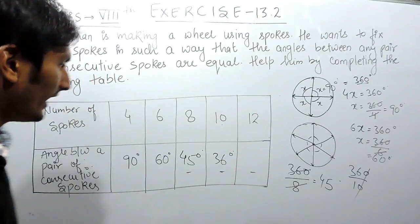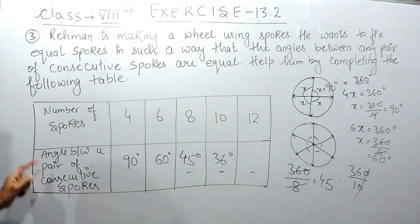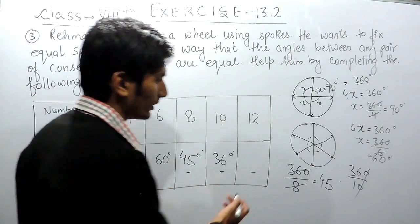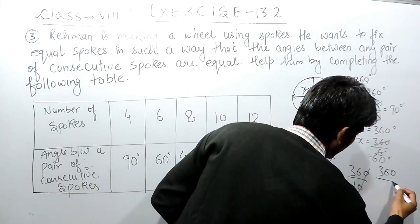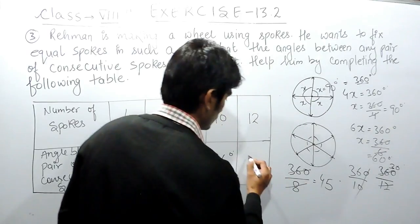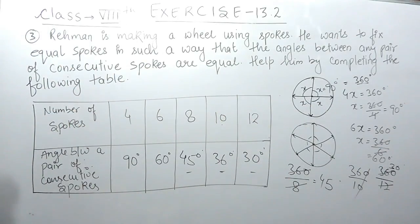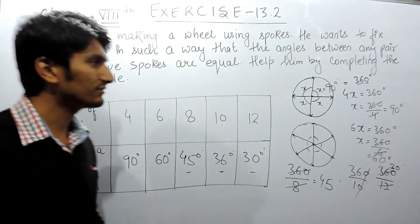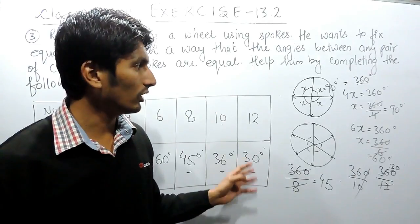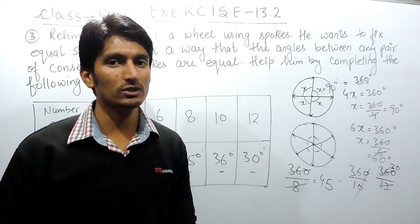Now the number of spokes is 12, so clearly the number of angles will be 12, and you have to find the angle between any two consecutive spokes. You divide 360 by 12, which gives 30 degrees. This is how you solve this first part. Similarly, the remaining three parts can be solved in the same way, and in the next video I will explain how those parts can be solved.